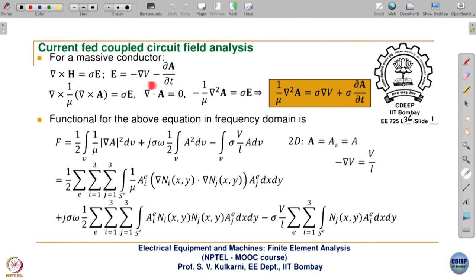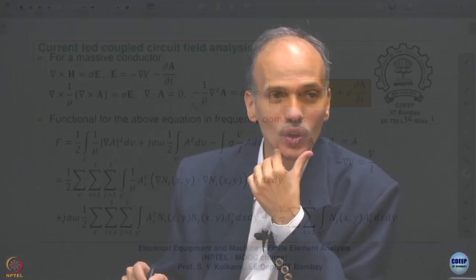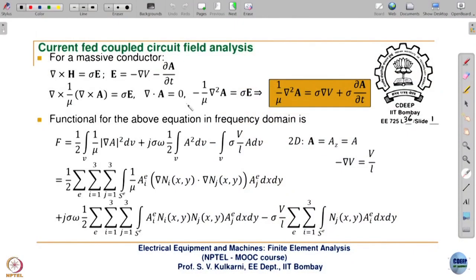We invoke the Coulomb gauge, which we have seen in basics of electromagnetics: divergence A equal to 0. In general, divergence A equals minus mu epsilon dV/dt, which is called the Lorentz gauge. Since frequency is small, we get divergence A equal to 0. This is invoked because del cross of del cross A is del(divergence A) minus del-squared A, that is the vector identity. So with divergence A equal to 0, we are left with minus (1/mu) del-squared A equal to sigma E.